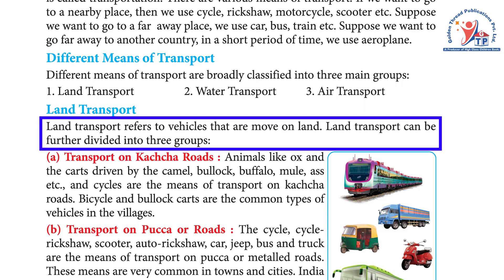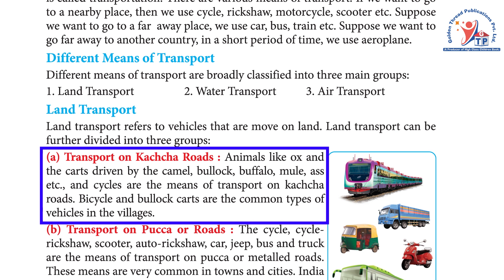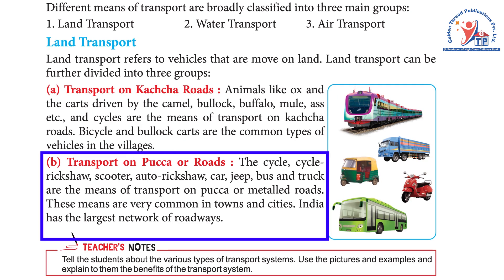Land transport can be further divided into three groups. A) Transport on kacha roads: animals like ox, and carts driven by camel, bullocks, buffalo, mule, ass, etc., and cycles are the means of transport on kacha roads. Bicycle and bullock carts are the common types of vehicles in the villages.